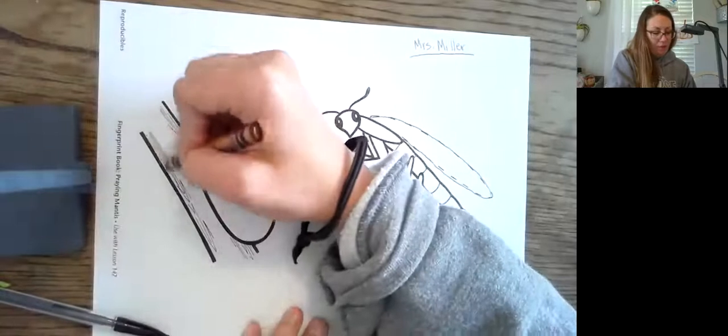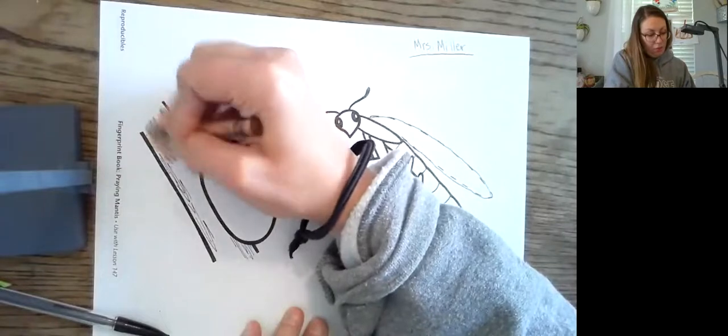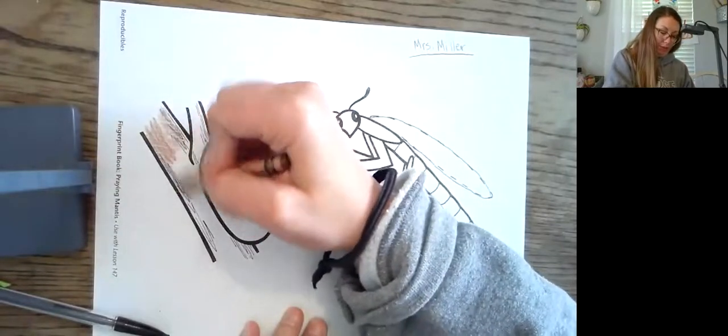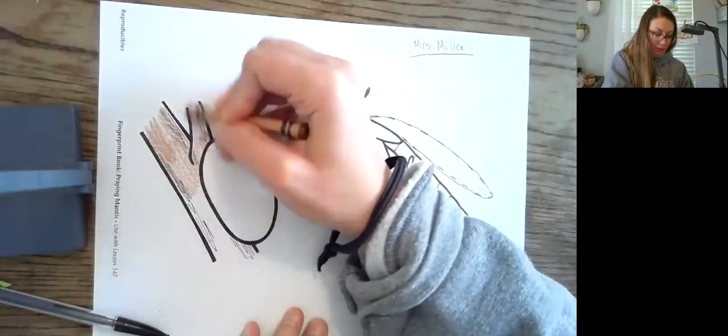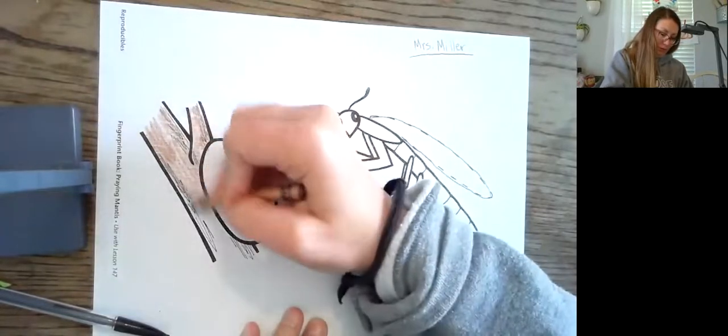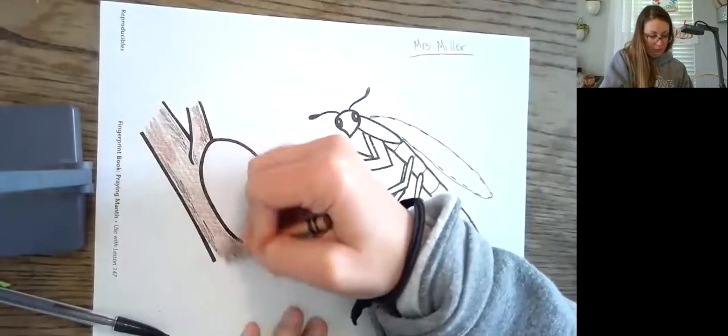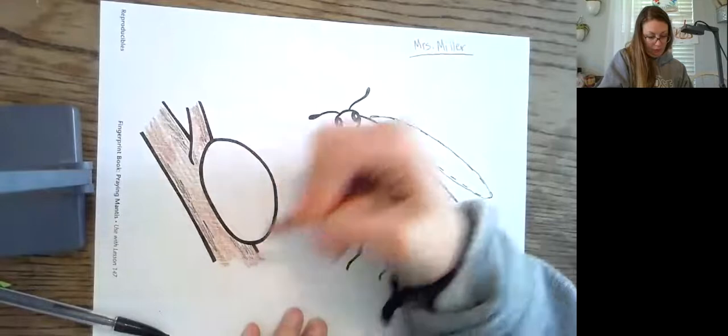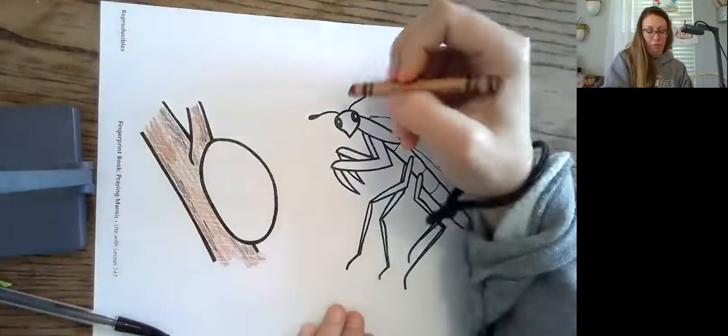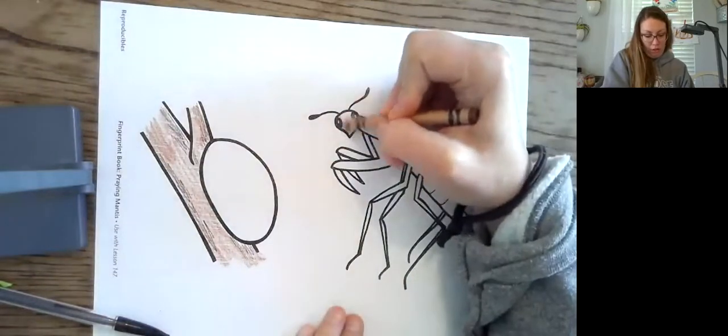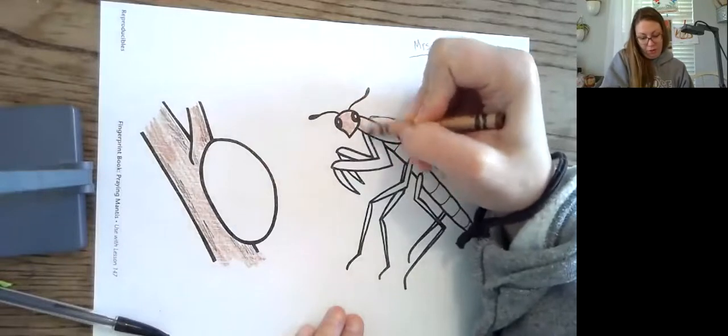So I'm just going to get started coloring our tree branch. The tree branches are brown. And then it has coloring the rest of the body brown. So I'm just going to do exactly what the book has to do. If you want to make yours green, you can make it green.